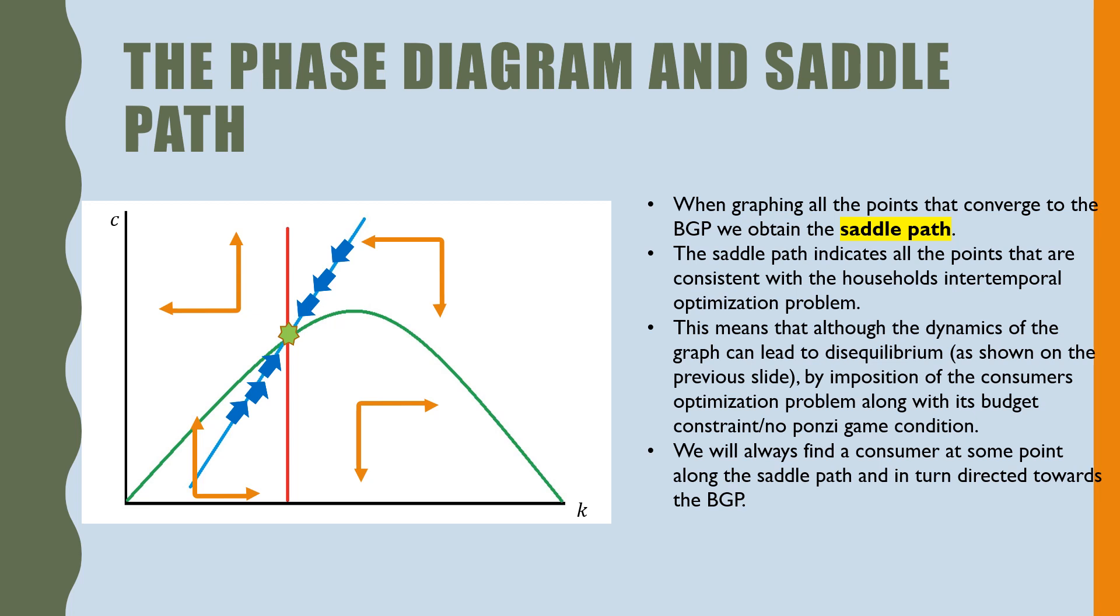This means that although the dynamics of the graph could lead to disequilibrium as shown on the previous slide, by imposition of the consumer's optimization problem along with its budget constraint and no Ponzi game condition, we find the consumer at some point along the saddle path to turn directly towards the BGP.